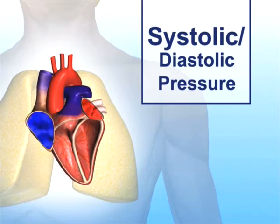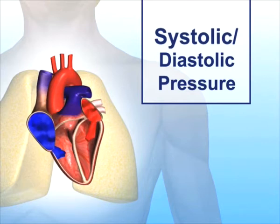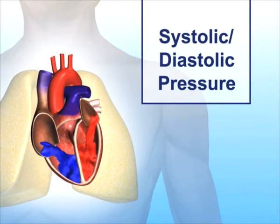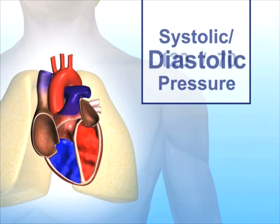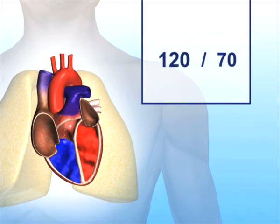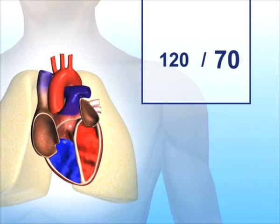When your heart relaxes between beats, your blood pressure decreases. This is called diastolic pressure. If your systolic pressure is 120 and your diastolic pressure is 70, your blood pressure would be recorded as 120 over 70.